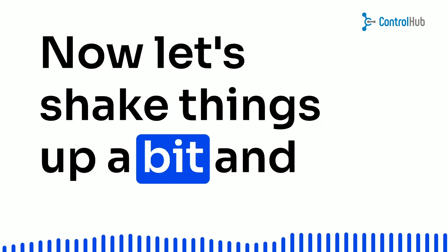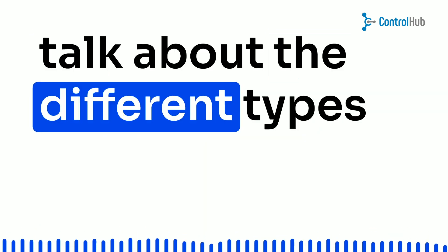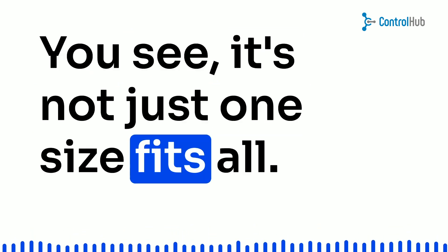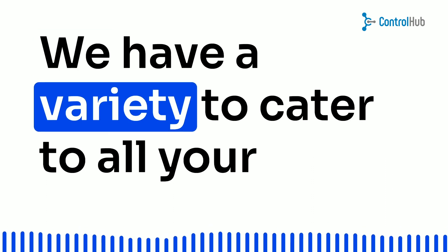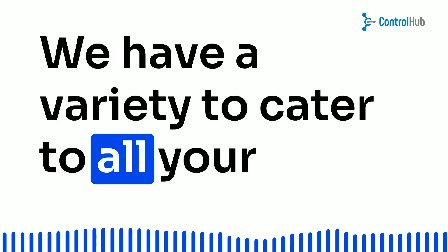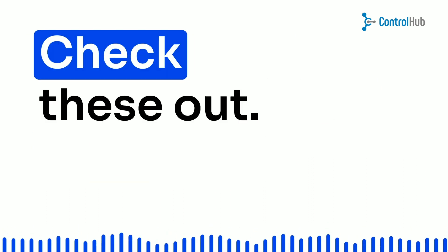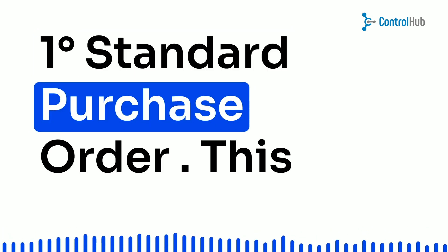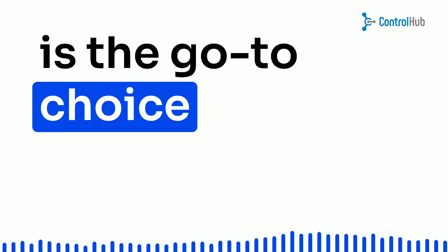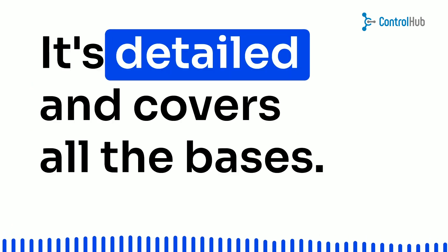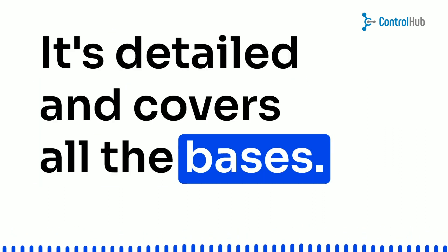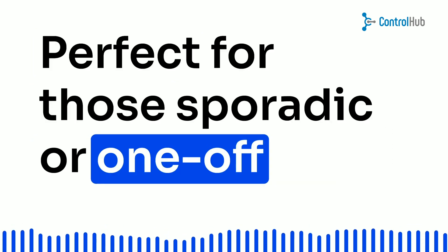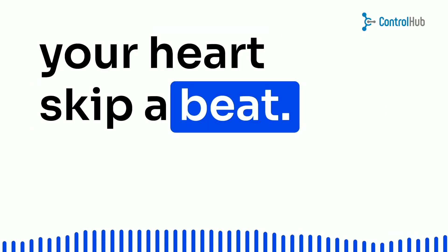Now let's talk about the different types of purchase orders — it's not just one size fits all. We have a variety to cater to all your purchasing needs. First, the standard purchase order: this is the go-to choice for most purchases. It's detailed and covers all the bases, perfect for those sporadic or one-off purchases.